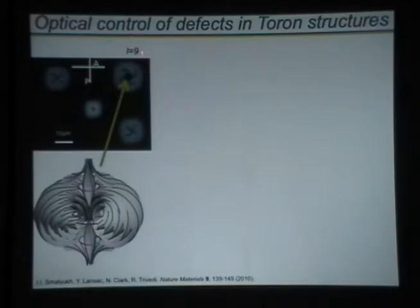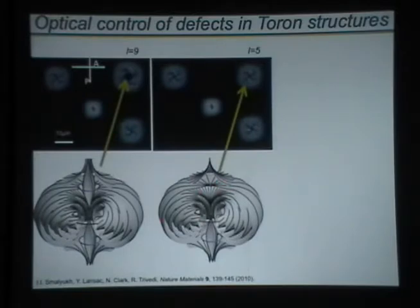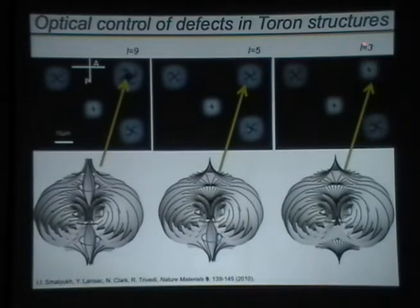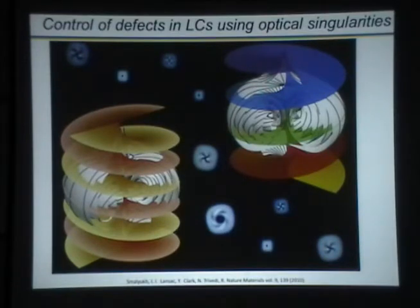When we use Laguerre-Gaussian beams of charge 9, we can generate the torus with two disclination loops. Switching the charge to 5, the structure transforms into a configuration with one point defect and one disclination loop. Changing the charge to 3, we obtain two point defects at opposite substrates of the liquid crystal cell. This shows we can use phase singularities in the laser beams to generate and control the types of defects in liquid crystals.